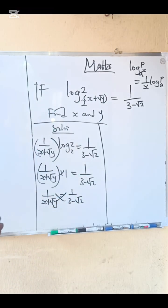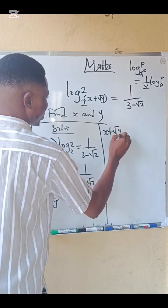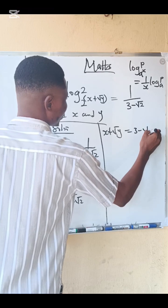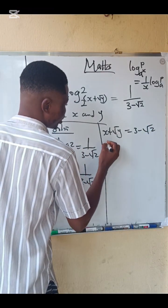We can cross multiply, so x plus root y equals 3 minus root 2. Now we compare by comparison.